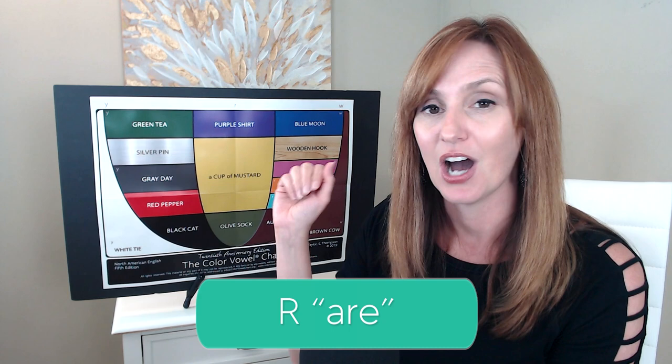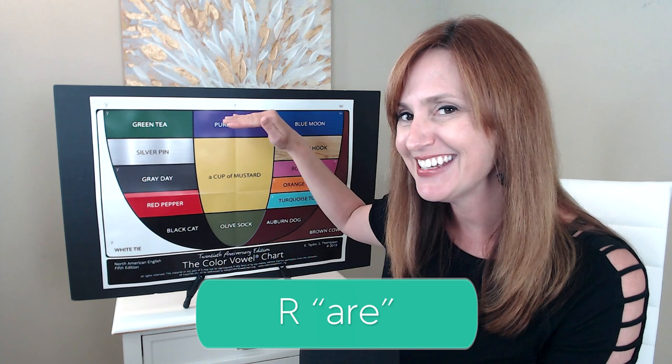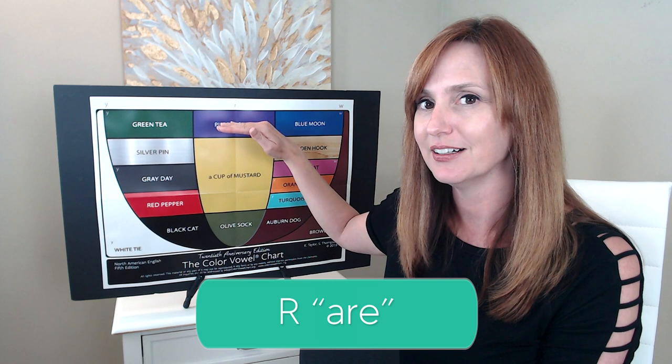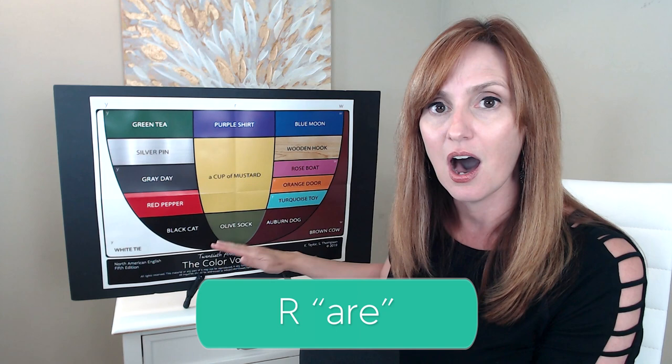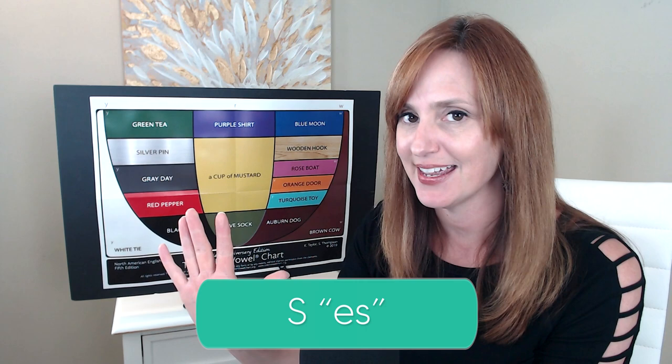R. Olive sock R. The name of this letter is the olive sock vowel moving into the R sound — one of our vowel plus R combinations. Notice how my mouth begins in a more open position for the olive sock vowel and moves into the R. R. Olive sock R. Also sounds like the word 'are.' R.